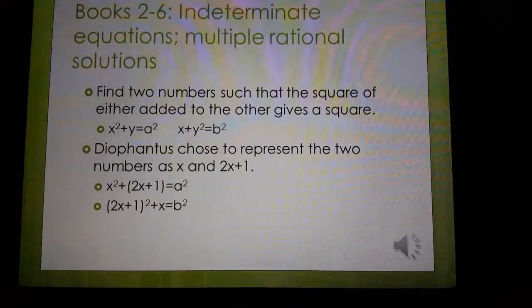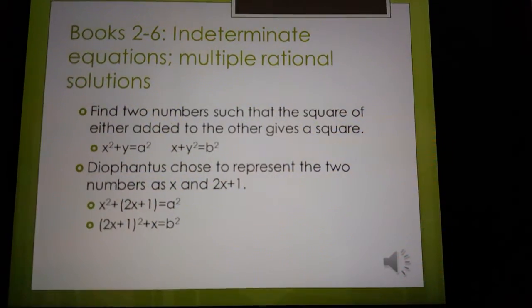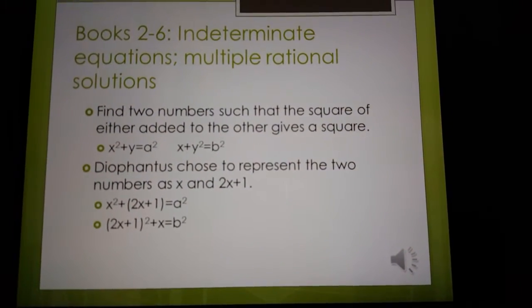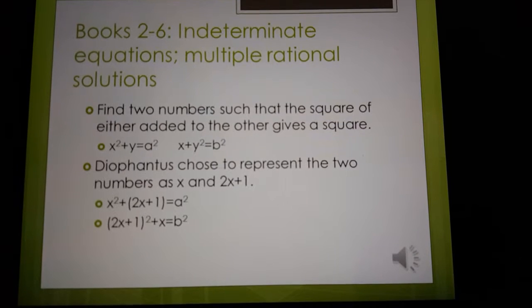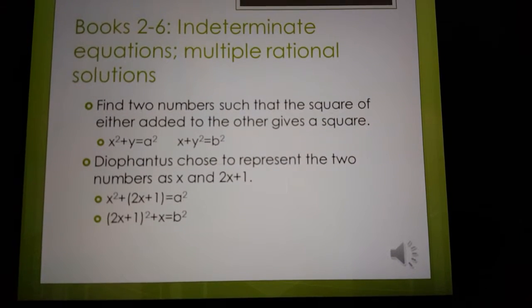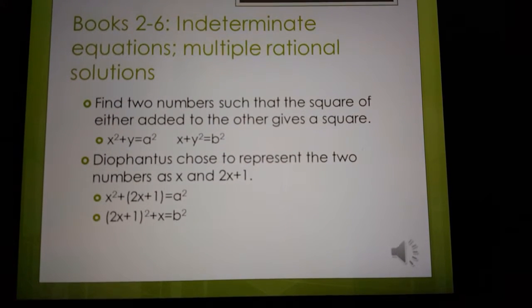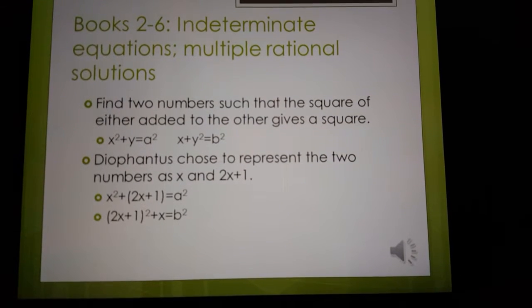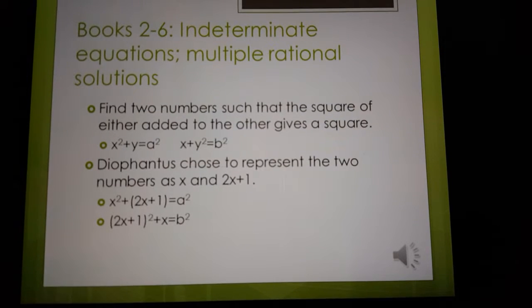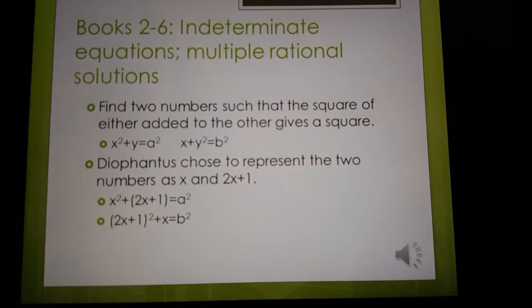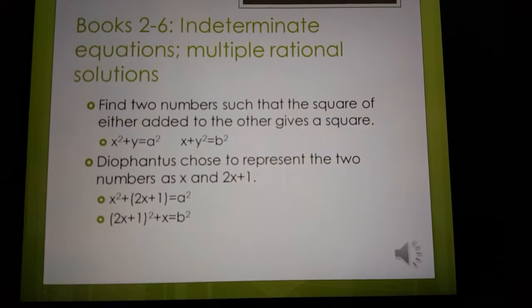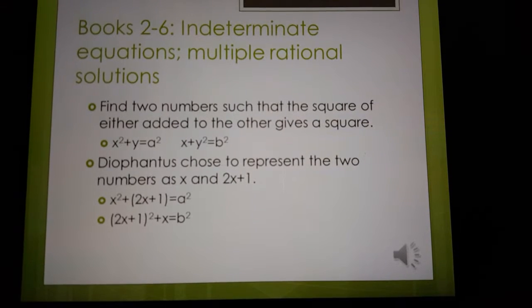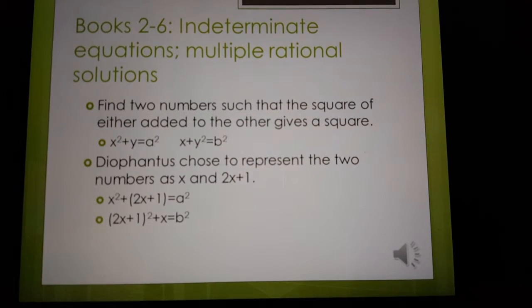In books 2 through 6, there were indeterminate equations which have multiple rational solutions. One of the problems is find two numbers such that the square of either added to the other gives a square. So algebraically, x squared plus y equals a squared, and x plus y squared equals b squared.